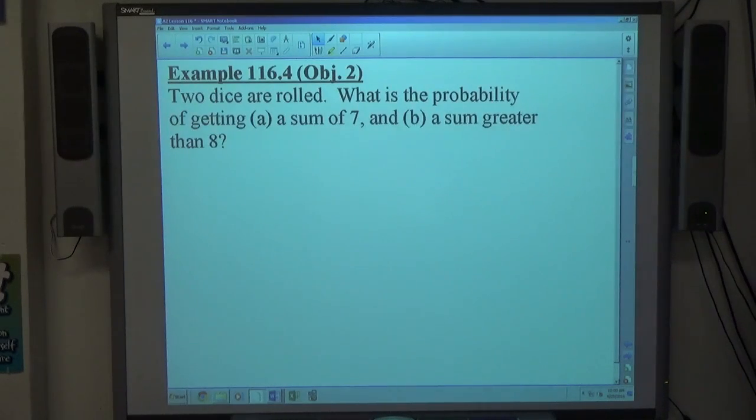Okay, finally for lesson 116, example 4. Two dice are rolled. What's the probability of getting a sum of 7, and a sum greater than 8?